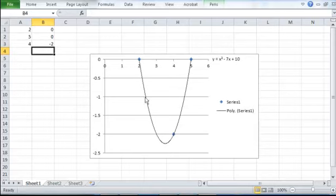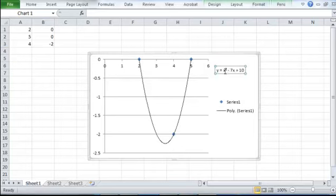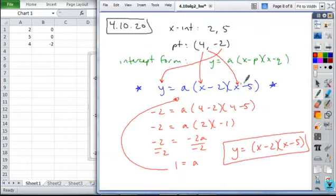Now notice, each time I did that, my graph changed and adjusted, and so I get my equation, and all I'm interested in from this is the coefficient. The coefficient is 1, so that's all I need to add to my work.